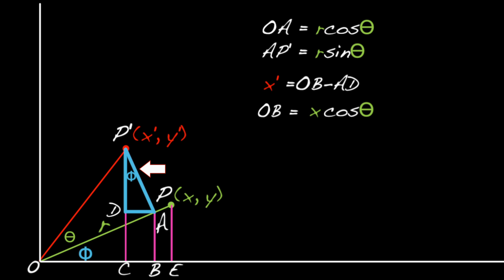Well, AD is opposite phi in the triangle DP prime A. So, sine phi equals AD over AP prime. And we know that AP prime equals R sine theta. So, sine phi equals AD over R sine theta, which means AD equals R sine theta sine phi.